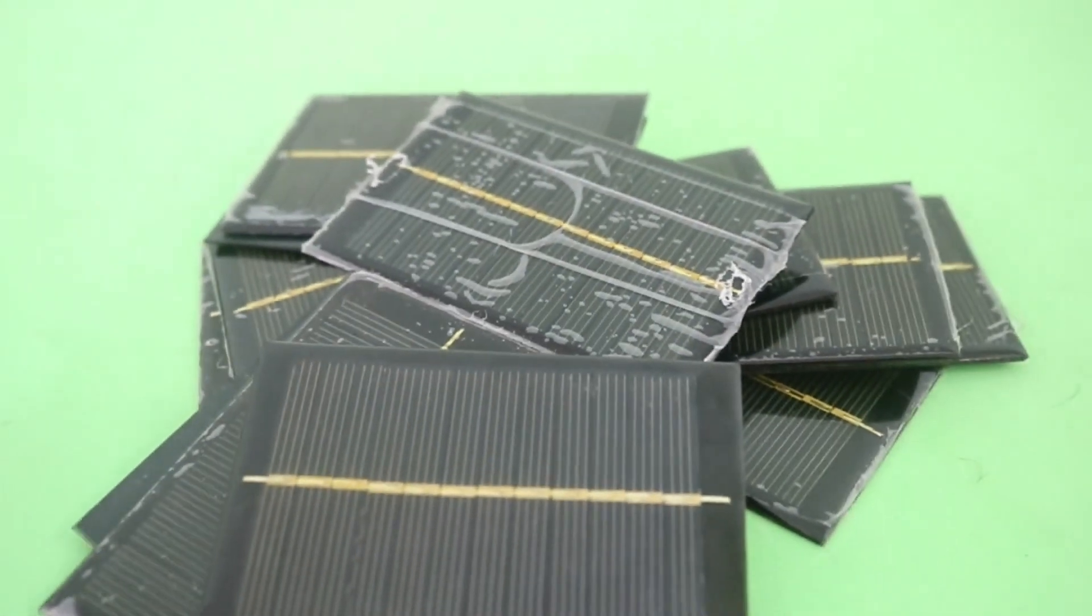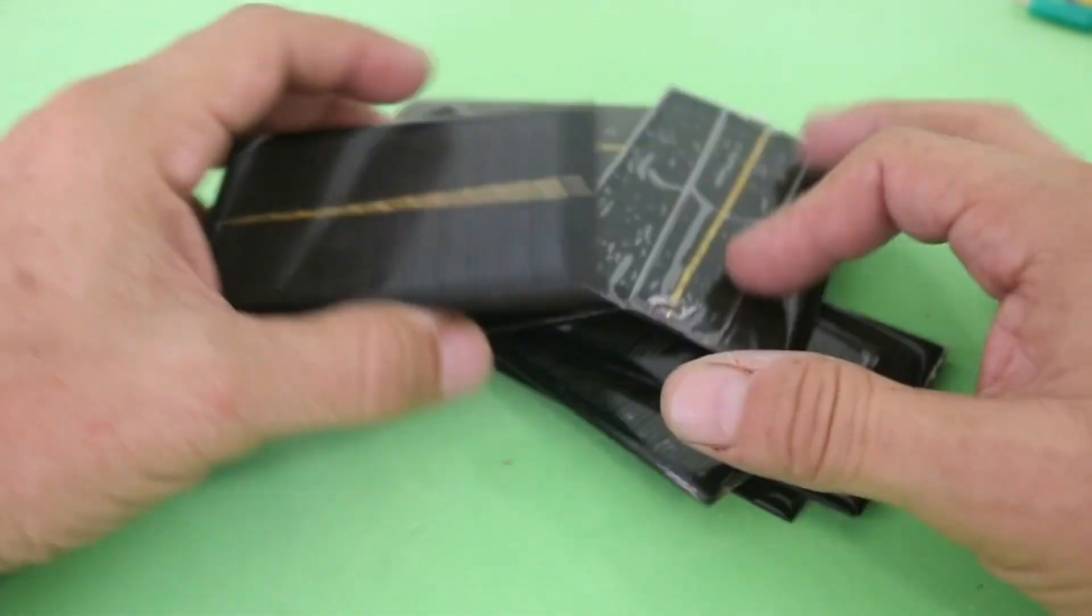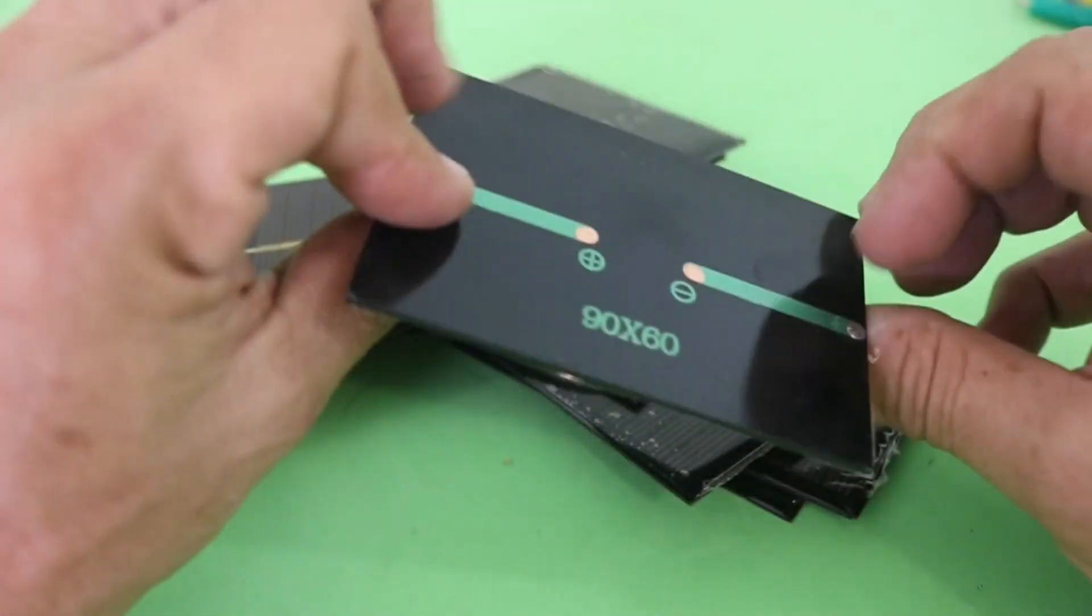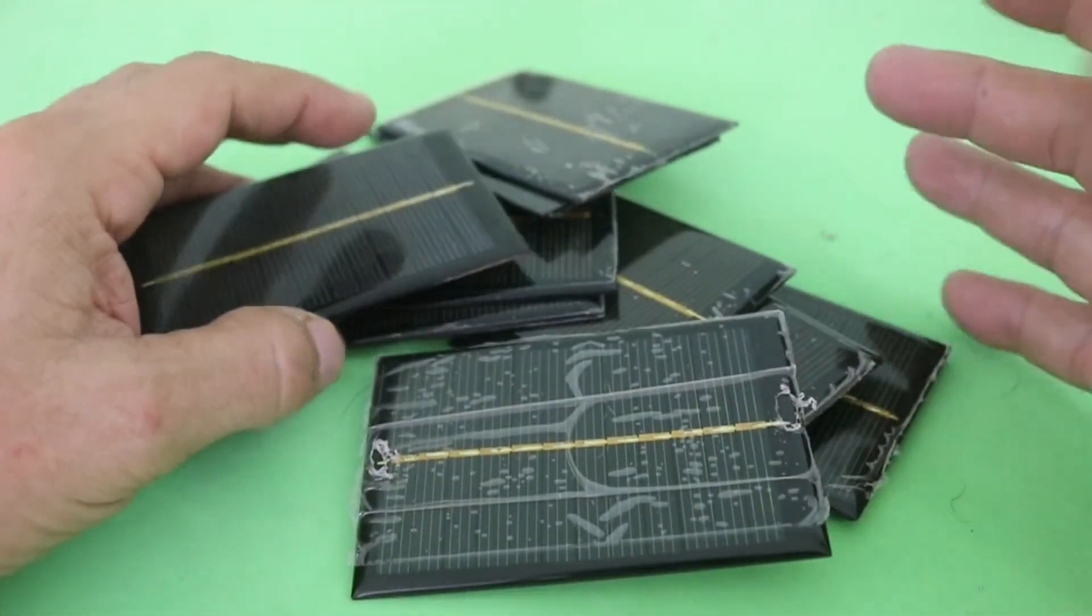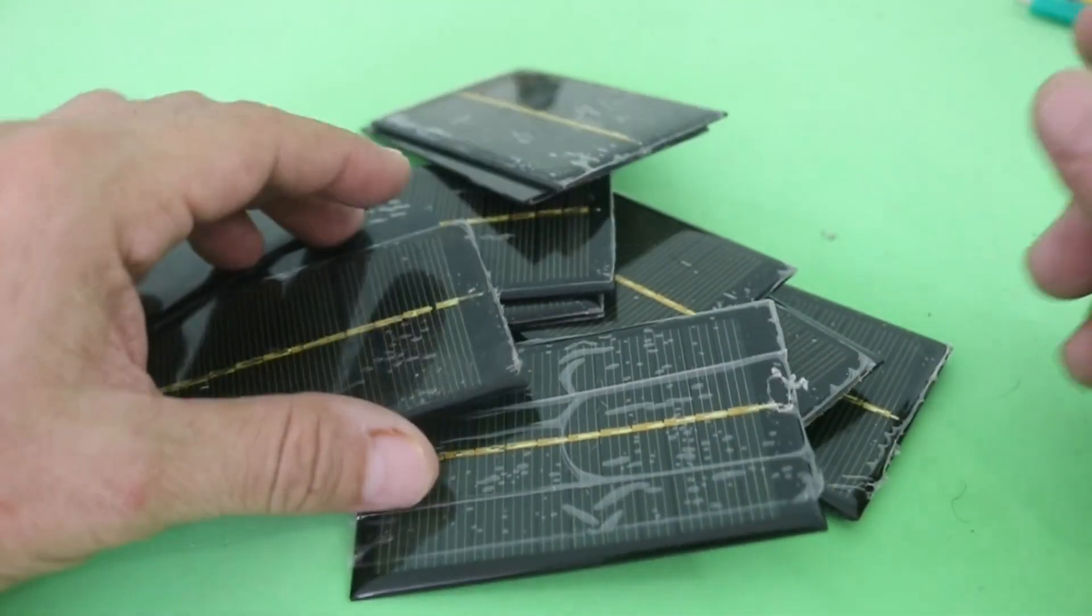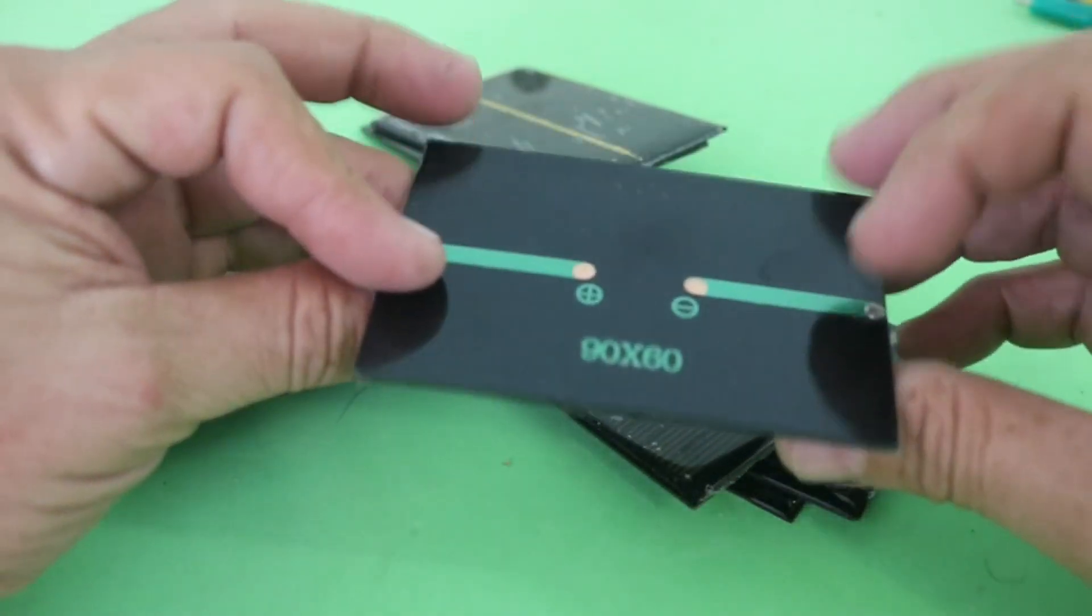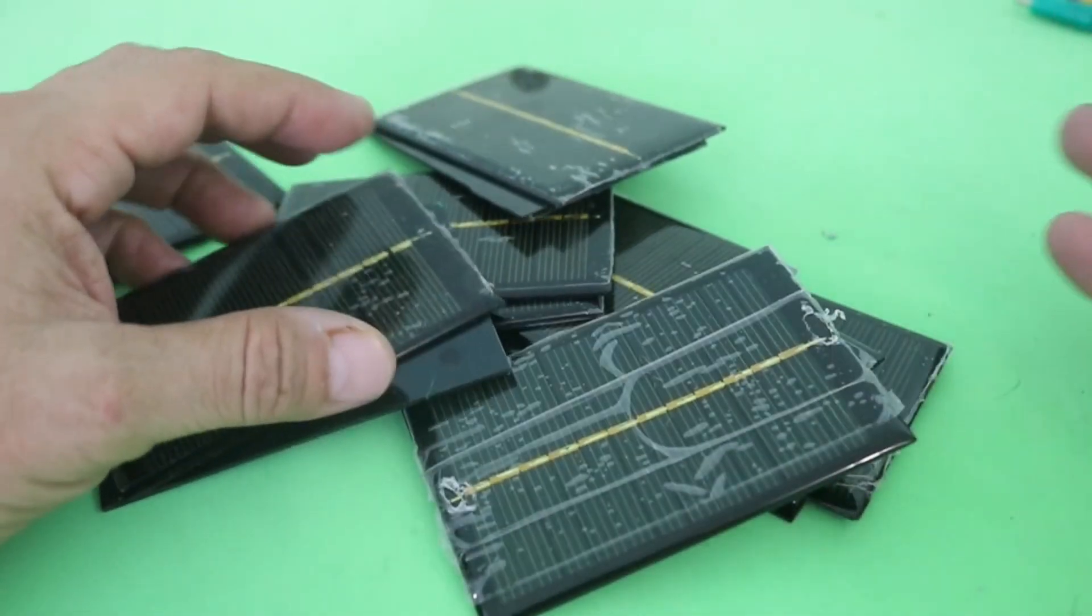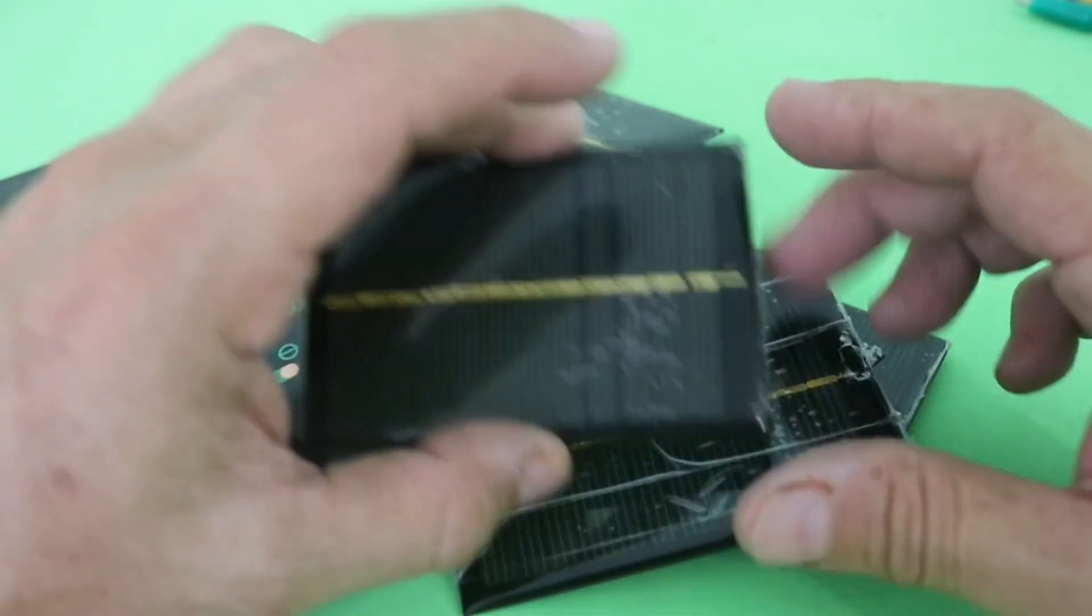Hello, welcome to Ludic Science. I just got these small solar cells. I found them in an old box. I bought them some time ago and haven't used them for any project. So I decided to make a small solar panel with the cells.